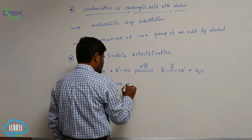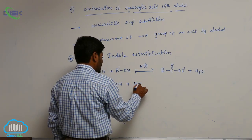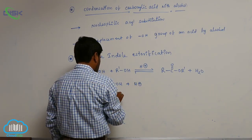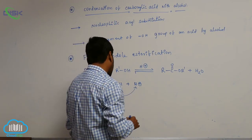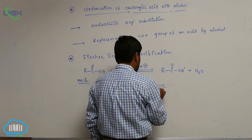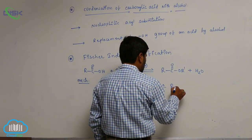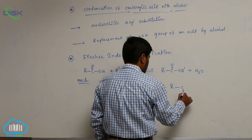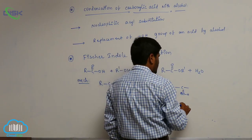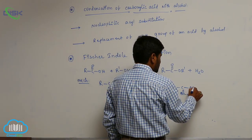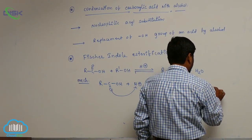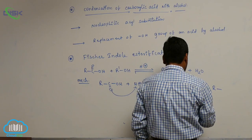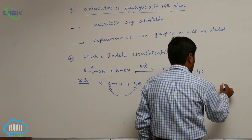When we observe the mechanism: first, for R-C(=O)-OH, H+ is added. The lone pair of electrons attacks H+, and there is protonation on the carbonyl oxygen or acyl oxygen.